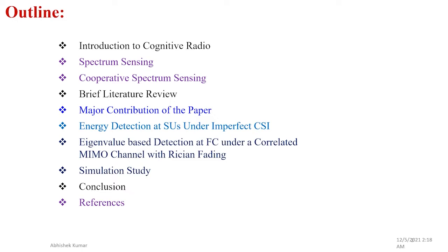Further topics include a brief literature review about multi-user MIMO cooperative spectrum sensing, the major contributions of the paper, energy detection at SUs, eigenvalue-based detection at the fusion center under a correlated fading MIMO channel, followed by simulation study, conclusion and references.